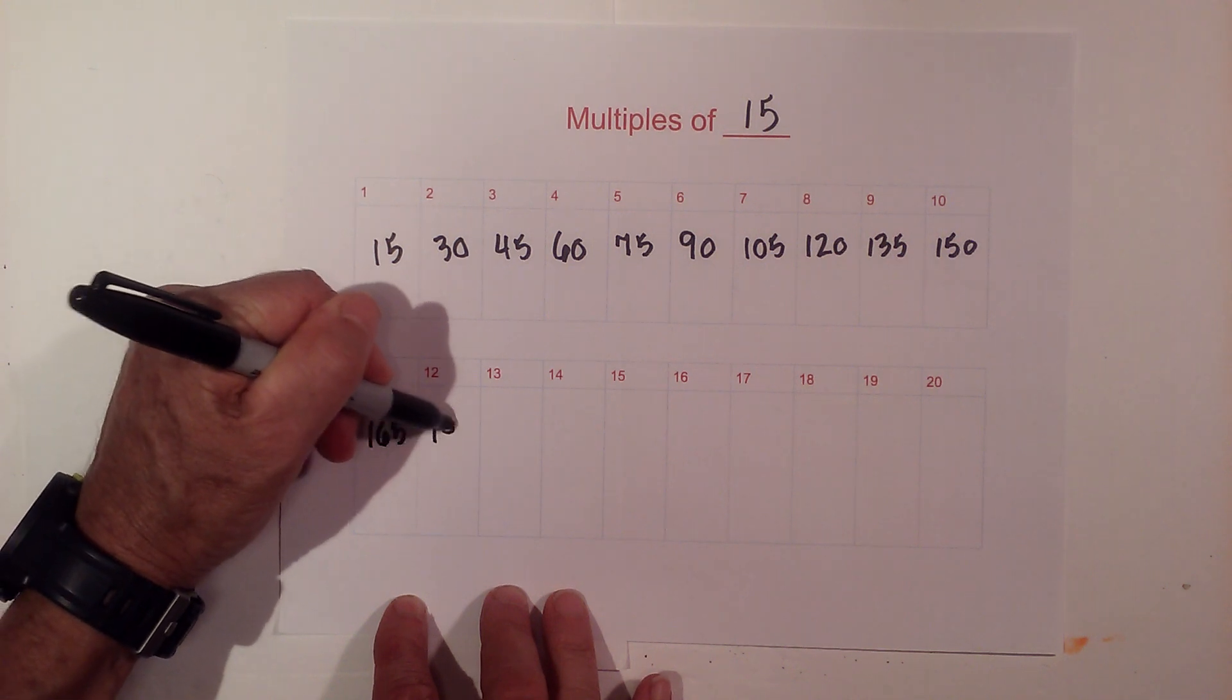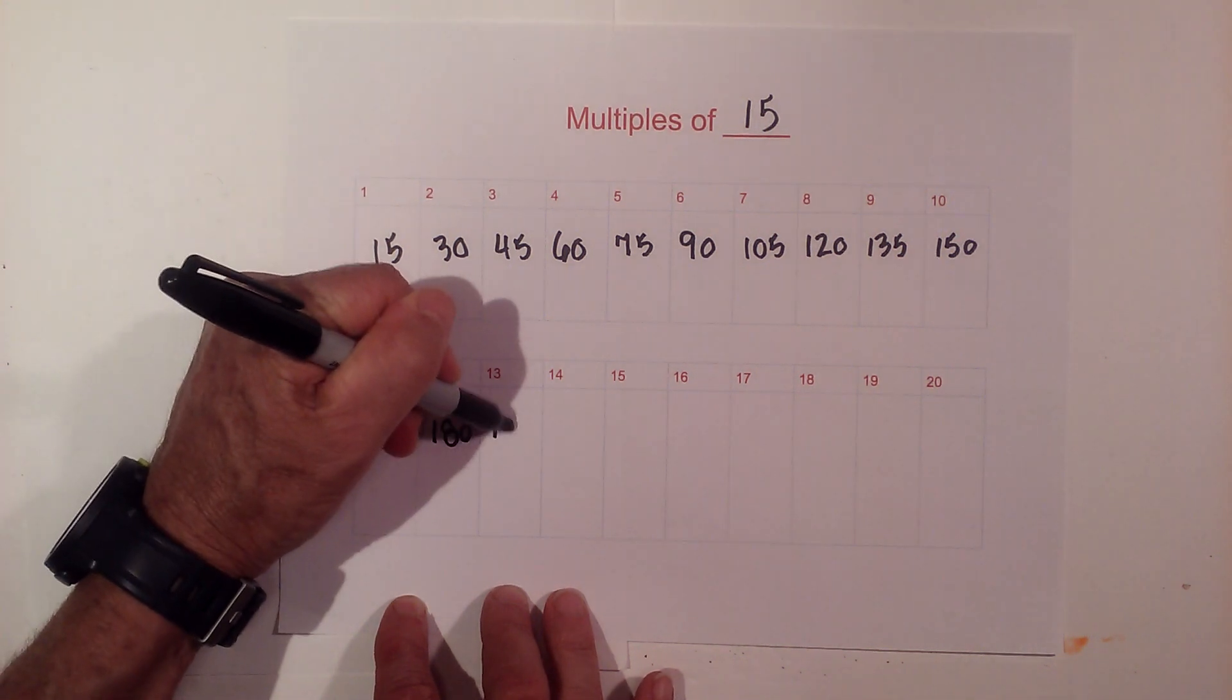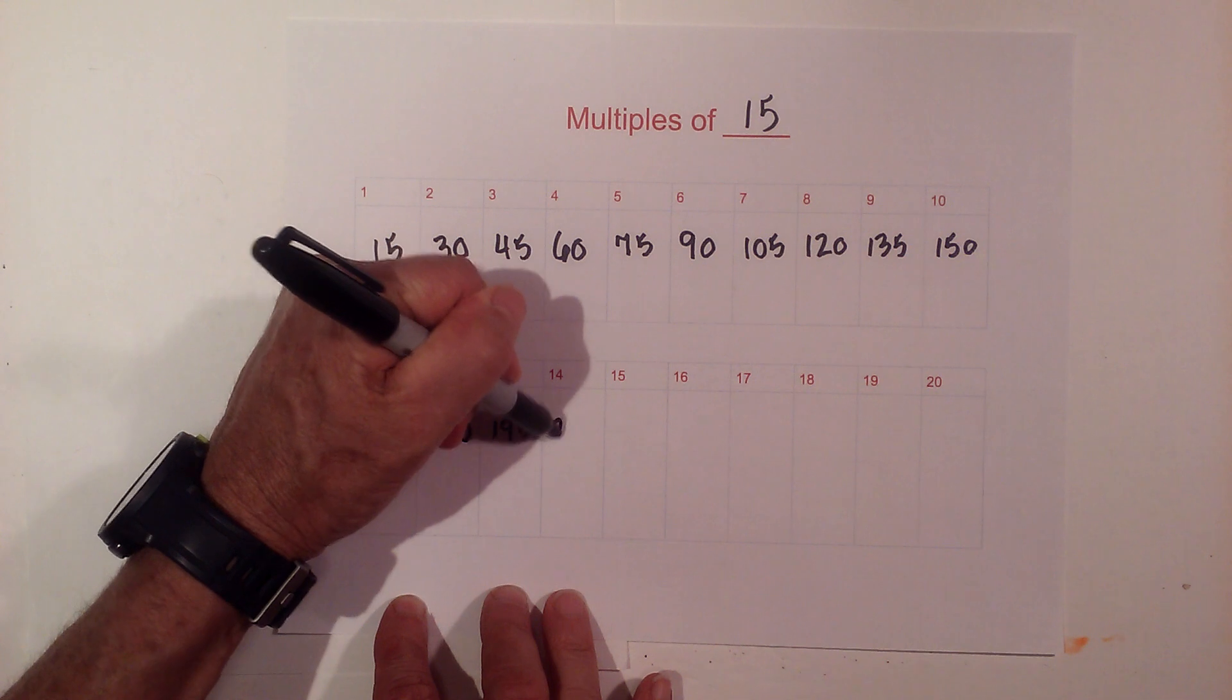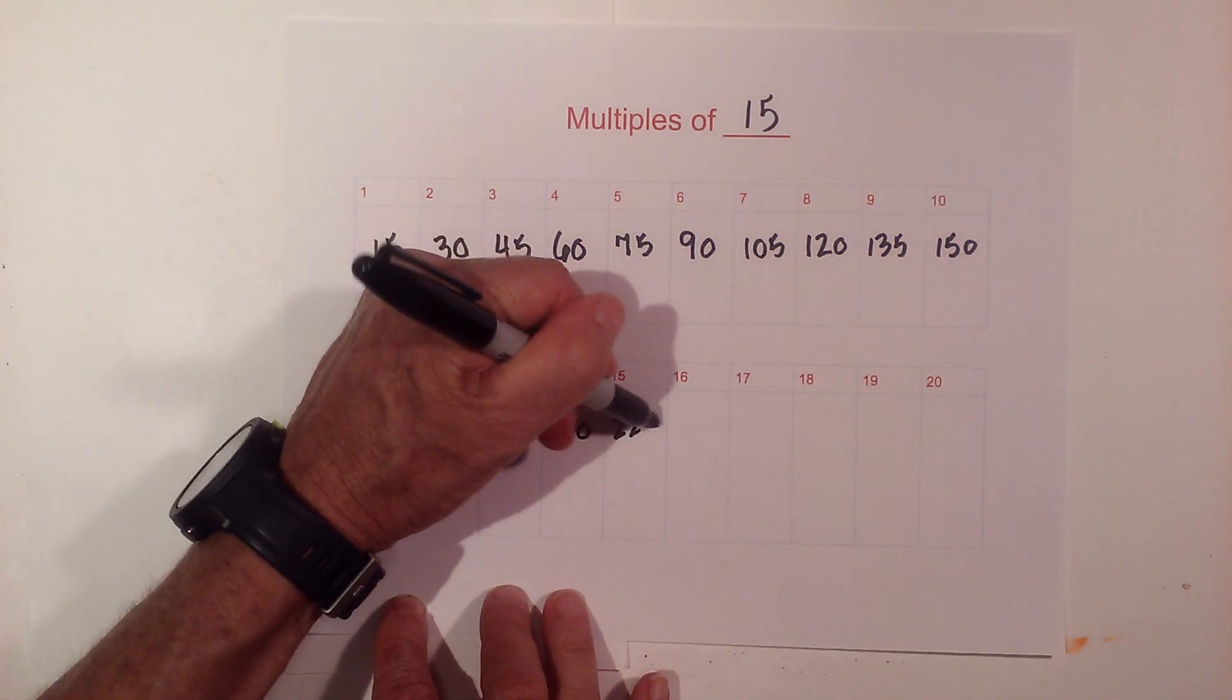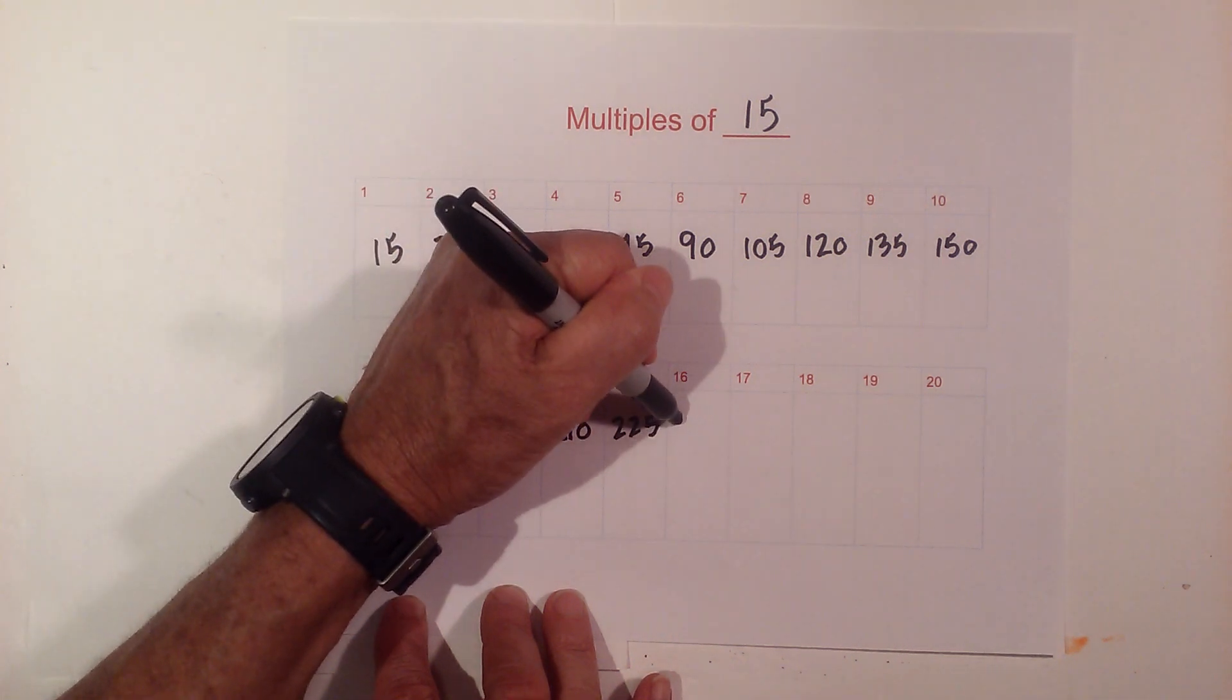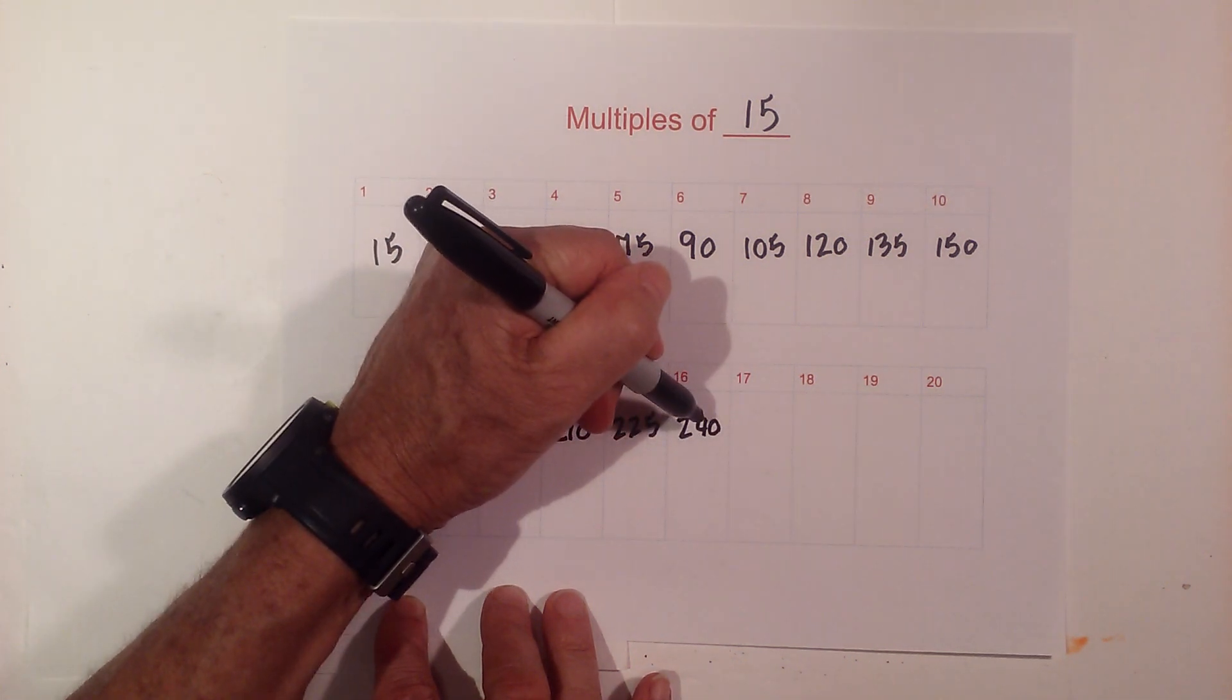Then 180, 195, 210. 15 times 15 is 225. Then times 16 is 240.